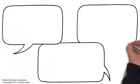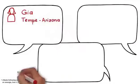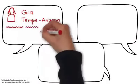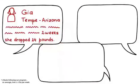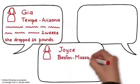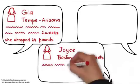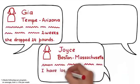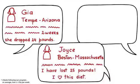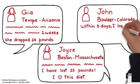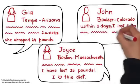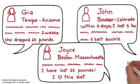Okay, here's what our most recent customers have said. From Gia in Tempe, Arizona, she writes: I had my 16-year-old daughter run through it once school let out. In two weeks, she dropped 24 pounds. Or how about this one from Joyce in Boston. Joyce writes: Since starting this diet in April, I've lost 25 pounds. I love this diet. And then there's John from Boulder, Colorado, who said within three days, I lost five pounds of fat and reduced my waist size by at least one belt buckle.